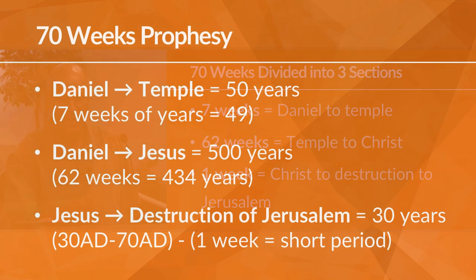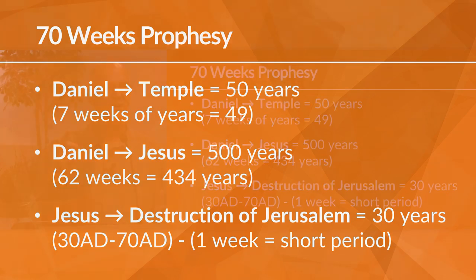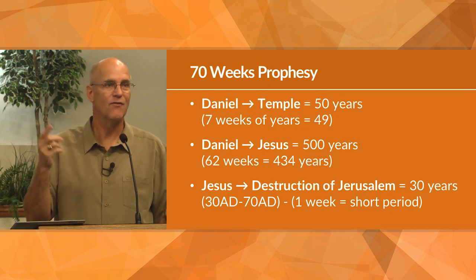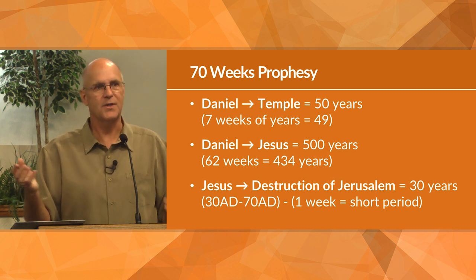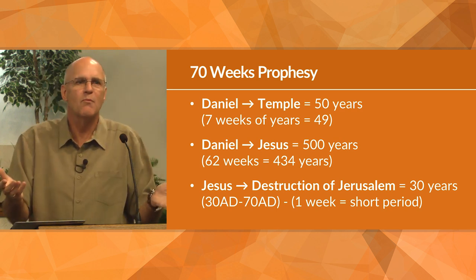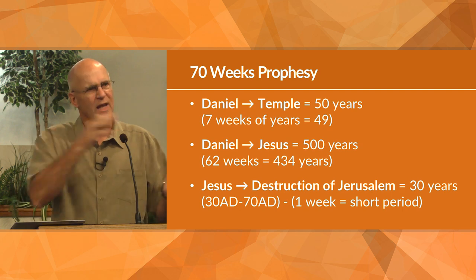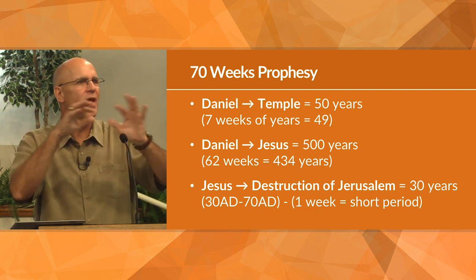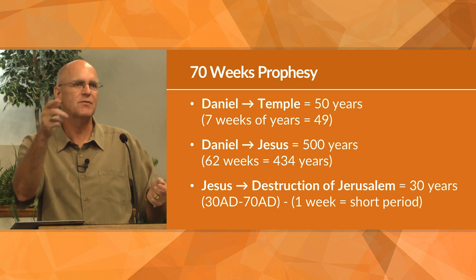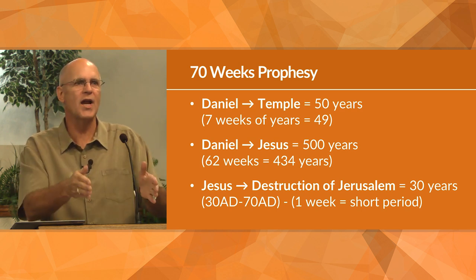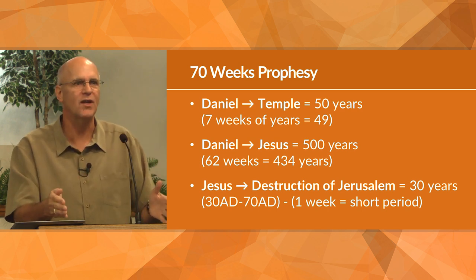For example, from the time Daniel made the prophecy to the temple's completion, historically we know was about 50 years. He says seven weeks — seven times seven is 49 years. You see? The point was not exact precision, but the general era. Then from Daniel to the beginning of Jesus' public ministry was approximately five centuries. Daniel says 62 weeks — 62 times seven is 434 years, approximately five centuries.